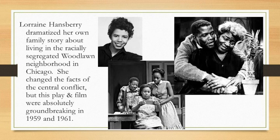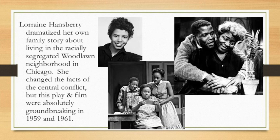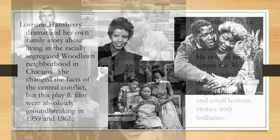Lorraine Hansberry, like Lillian Hellman, wrote a story about how money affects a family — except Lorraine Hansberry grew up in a racially segregated Woodlawn neighborhood in Chicago. The family received a life insurance check of around $10,000. It was a very successful play. She was the first African American author to have a play produced on Broadway, and it was also turned into a film. She took the title from a work by Langston Hughes — Raisin in the Sun. It tells the story of racial segregation, limited expectations, and how money changes a family — a universal story for many people in the 20th century.